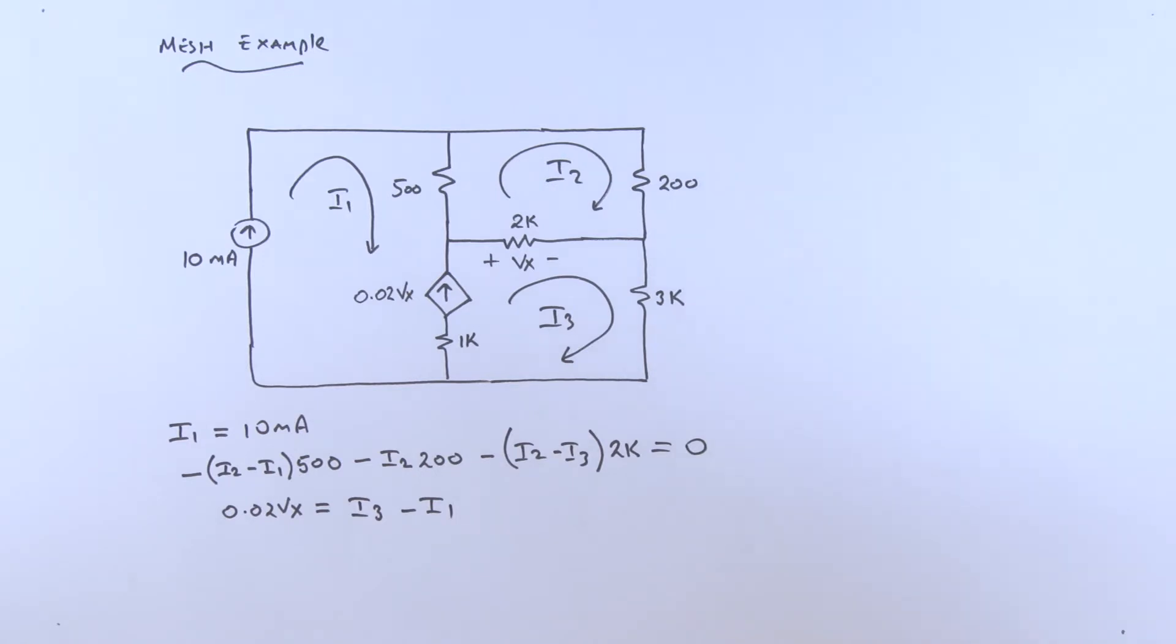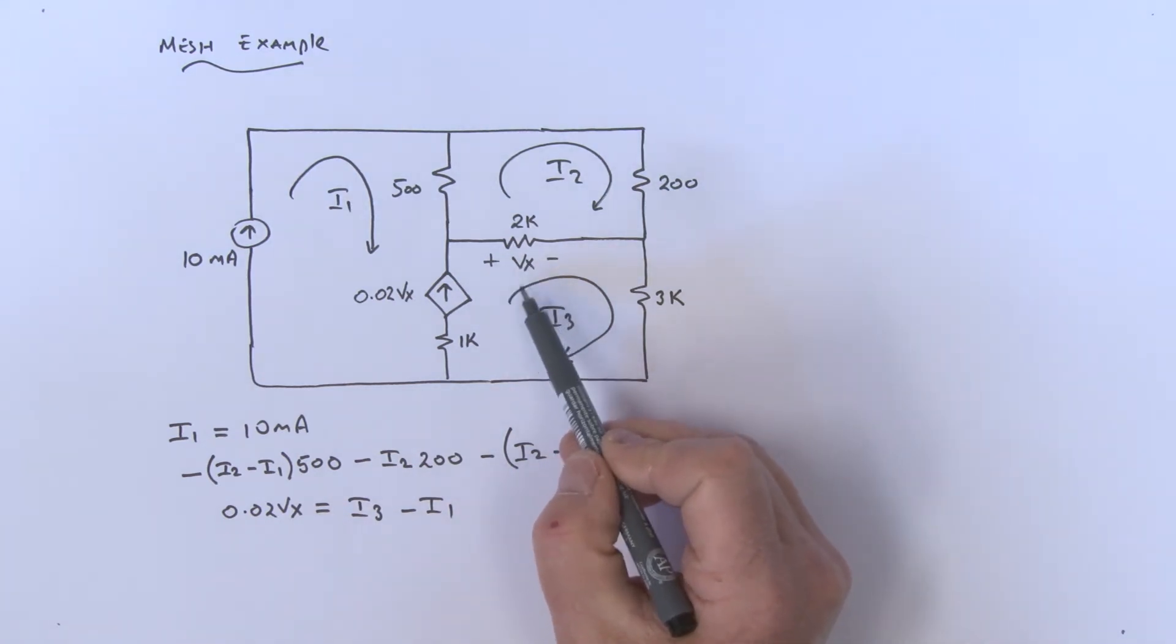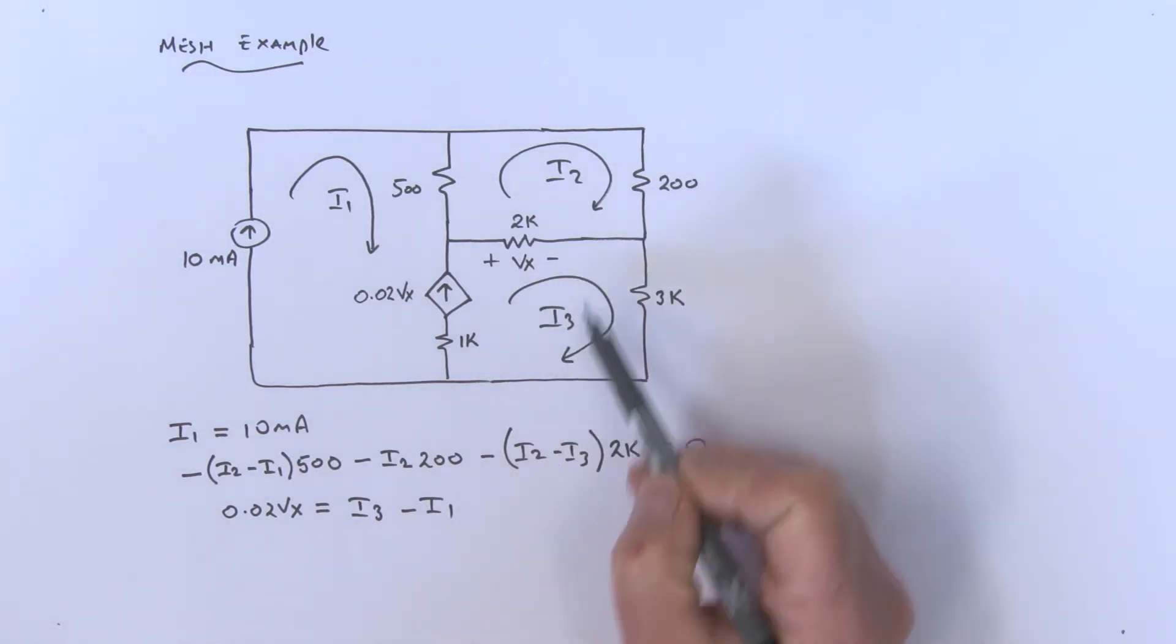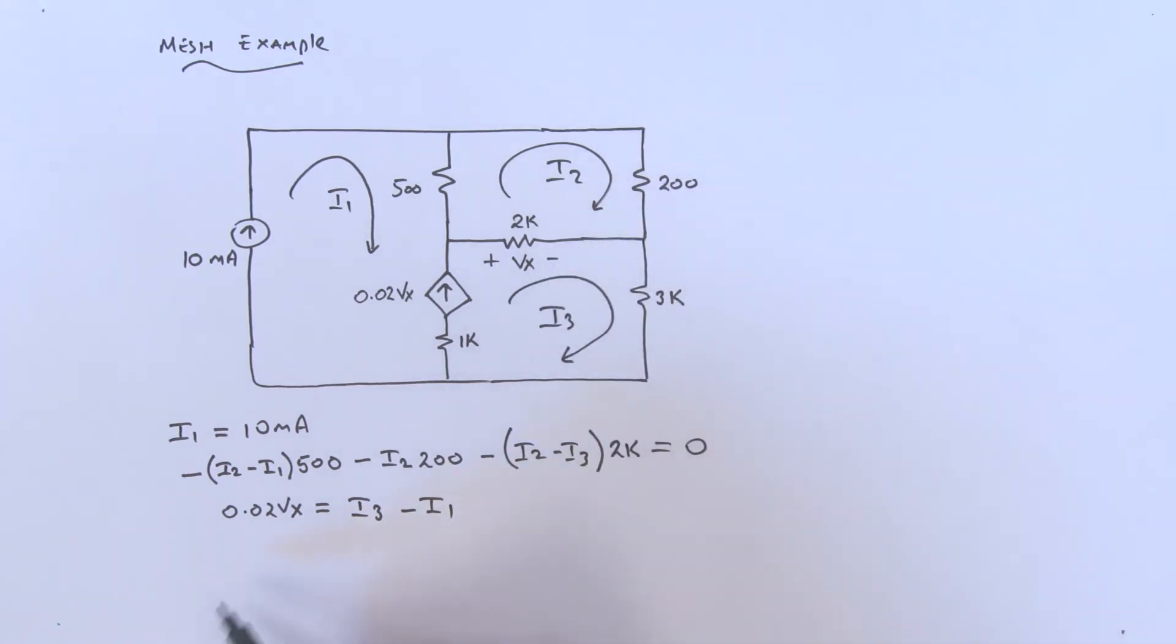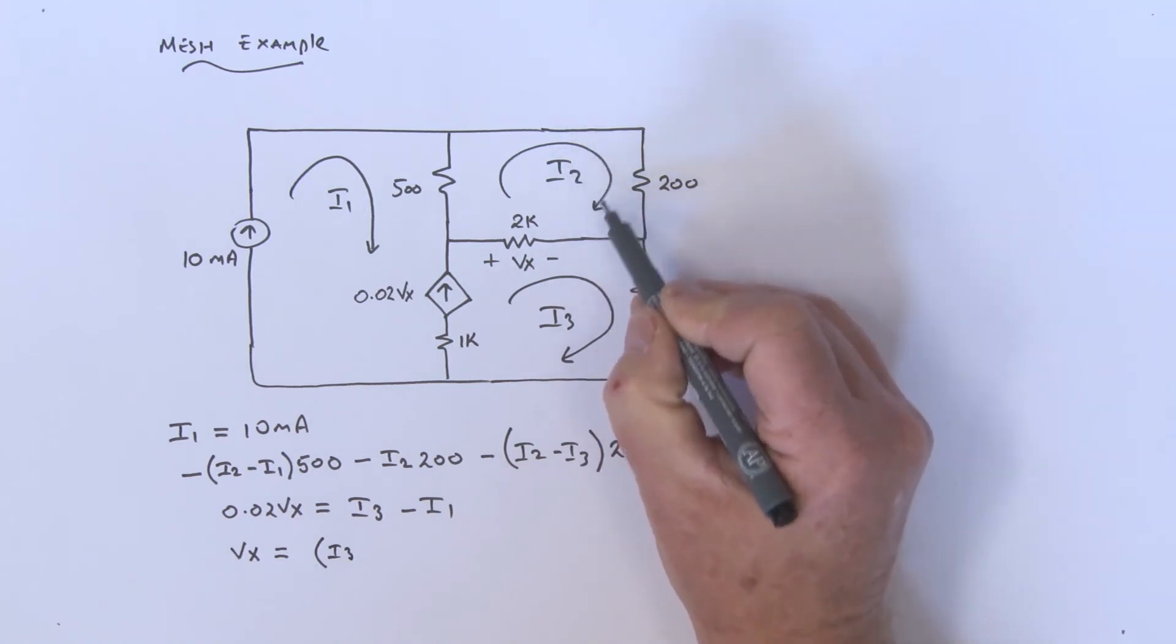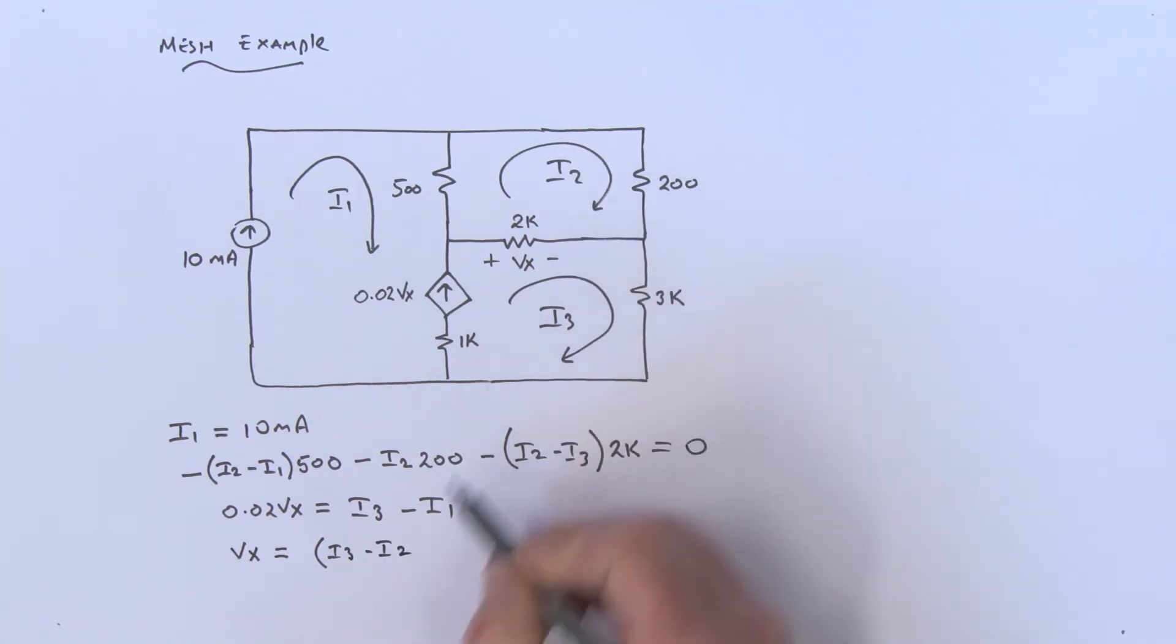I've got another variable sitting in here, which is this Vx. So what is this Vx equal to? Let's think about that. Vx is this voltage right here. So Vx must be equal to i3 minus i2 times 2k. I can write that down: Vx is really equal to, open up a bracket, it's i3 minus i2, and it's multiplied by that 2k.